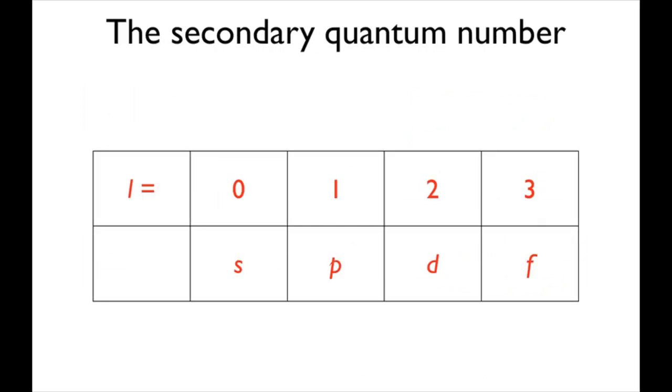When describing orbitals, the value of l is represented by a letter, which is s for l equals 0, p for l equals 1, d for l equals 2, and f for l equals 3.